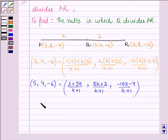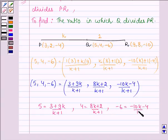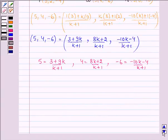Now on comparing the coordinates, we have 5 equals 3 plus 9k upon k plus 1, 4 equals 8k plus 2 upon k plus 1, and -6 equals -10k minus 4 upon k plus 1. So with the help of any of these three equations, let us find the value of k.